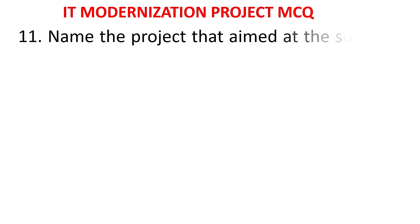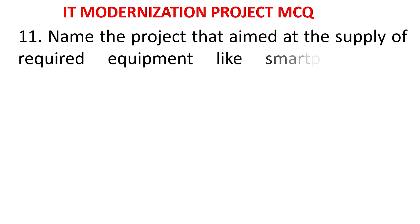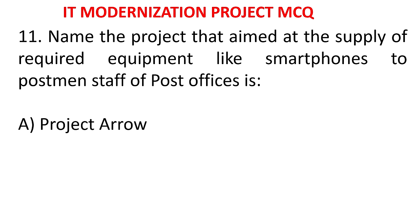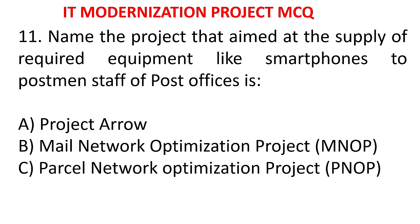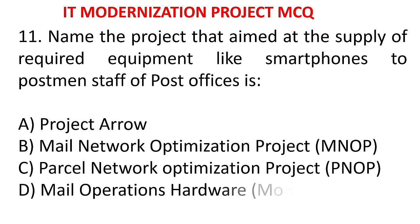MCQ 11: Name the project that aimed at supply of required equipment like smartphones to postmen and staff of post offices. Options: A) Project Arrow, B) MNOP, C) PARTS/MPNOP - Parcel Network Optimization Project, D) Mail Operations Hardware. The answer is mail operations hardware. Smartphones to postmen are supplied under mail operations hardware.